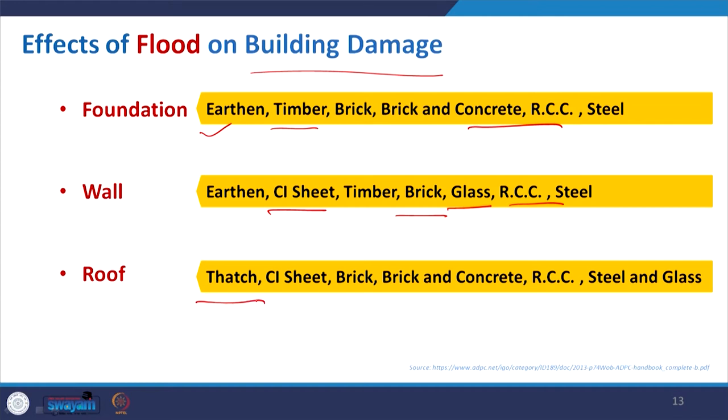For the wall above ground, if it is earthen material it will become porous and soften during long duration flooding, leading to collapse. Cast iron sheet, used in low-cost construction, will also not be strong enough. It depends on whether it is brick masonry or RCC. For the roof, if it is thatched, it will not sustain with heavy rain. But a concrete flat roof may sustain, and sometimes it is advisable that when building in a flood-prone area, go for a flat roof structure so people can accumulate at the rooftop during the flood.